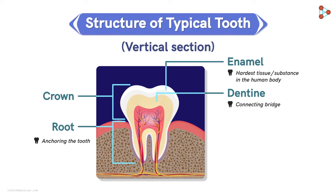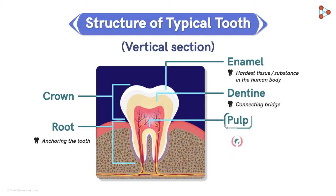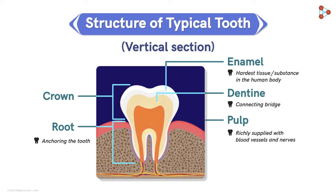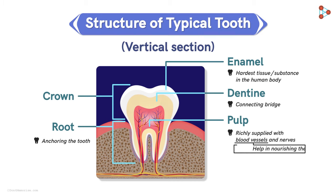Now let's talk about the next part — it is called the pulp. The portion is extremely soft and fleshy and is richly supplied with blood vessels and nerves. So whenever we feel pain in our mouth, it is this region that sends us a signal. And the blood vessels in the pulp also help in nourishing the tooth.